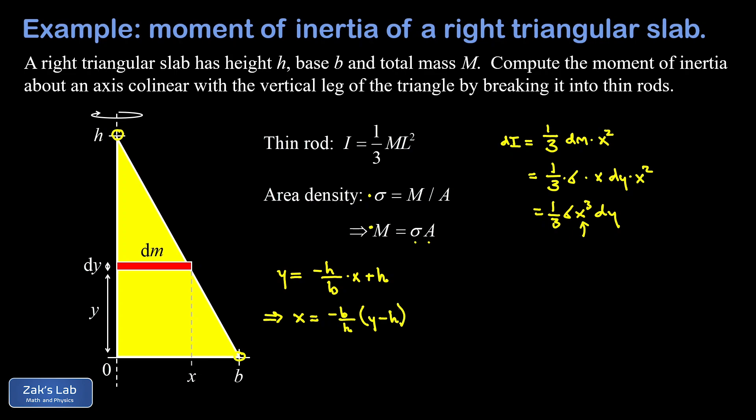To verify that this is correct, we can make sure that when y is equal to zero we get a width of b for one of our thin rods - that would be a rod at the very bottom of the triangle. If I imagine plugging in zero for y there, I would end up with negative b over h times negative h, and the h's would cancel, the minus signs would cancel, and I get x equals b like I'm supposed to.